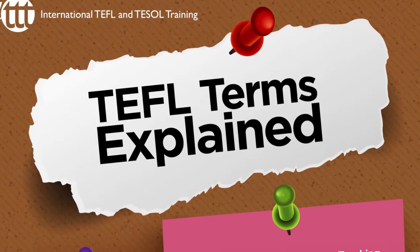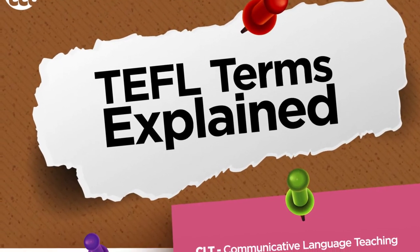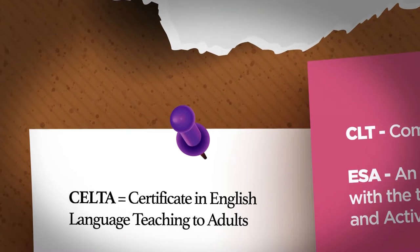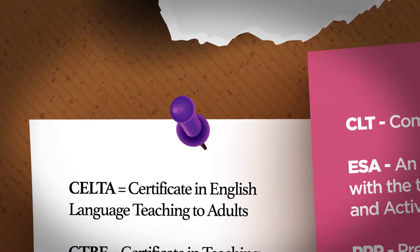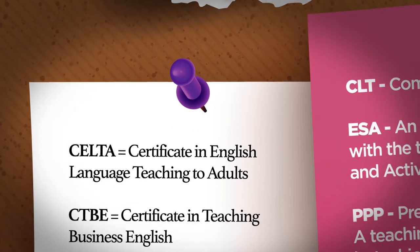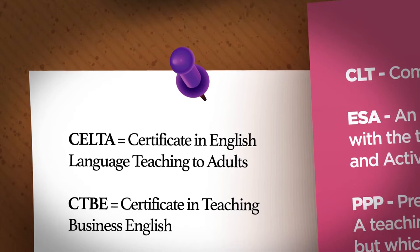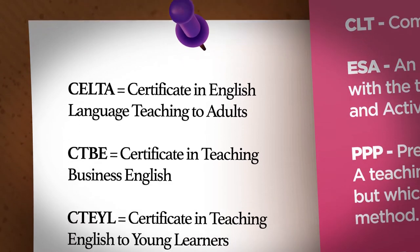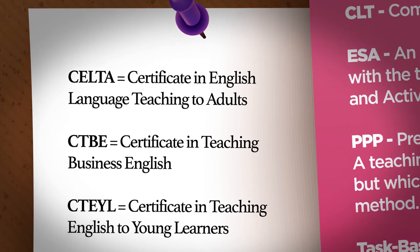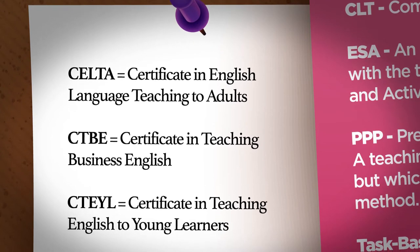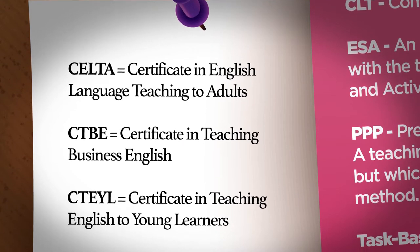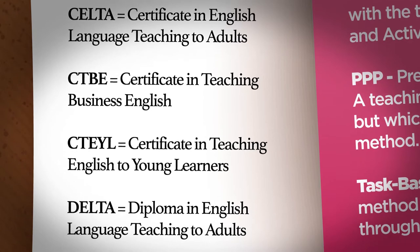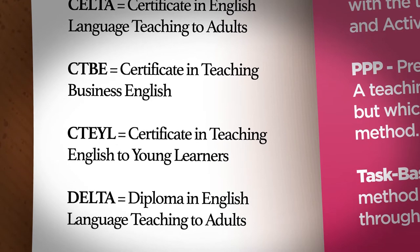TEFL Terms Explained. CELTA: Certificate in English Language Teaching to Adults. CTBE: Certificate in Teaching Business English. CTEYL: Certificate in Teaching English to Young Learners. DELTA: Diploma in English Language Teaching to Adults.